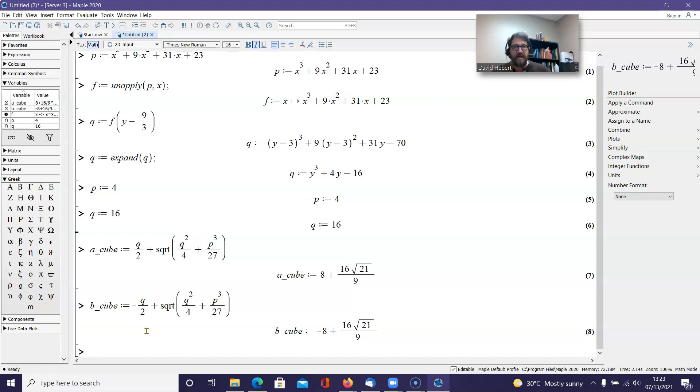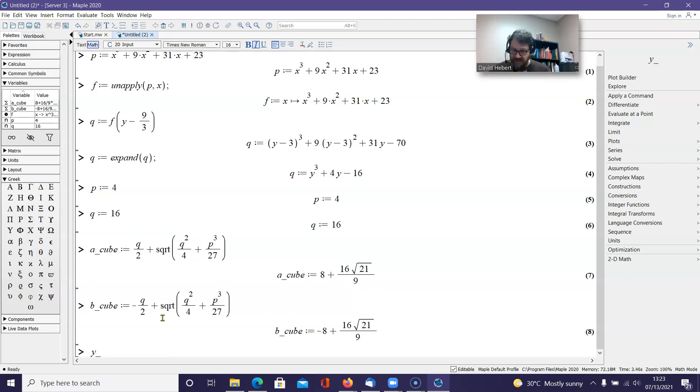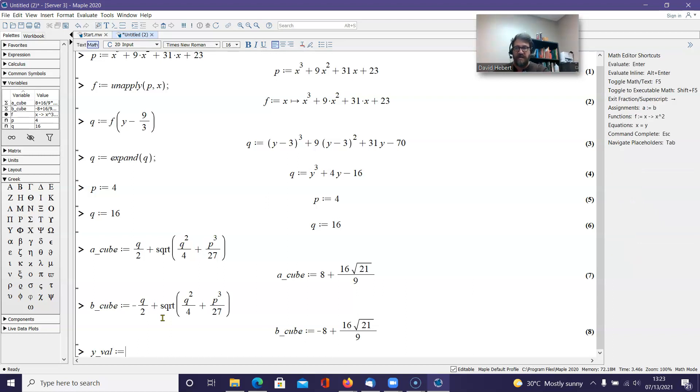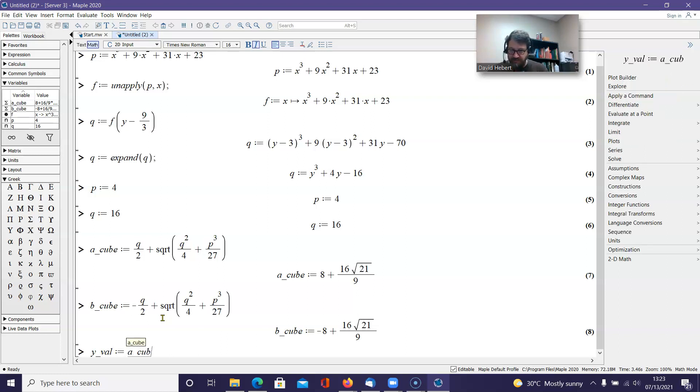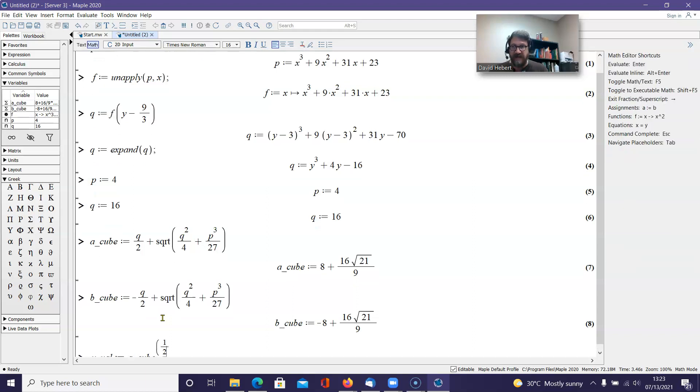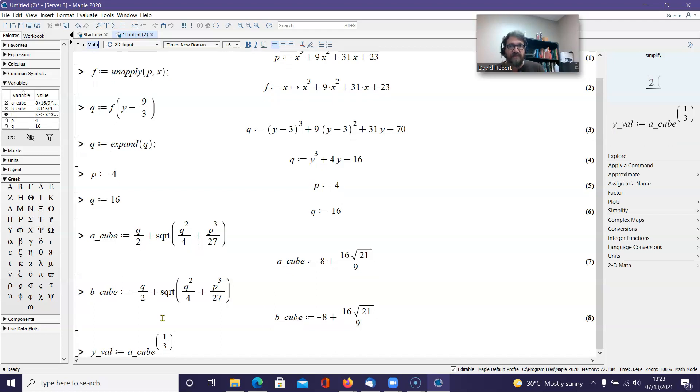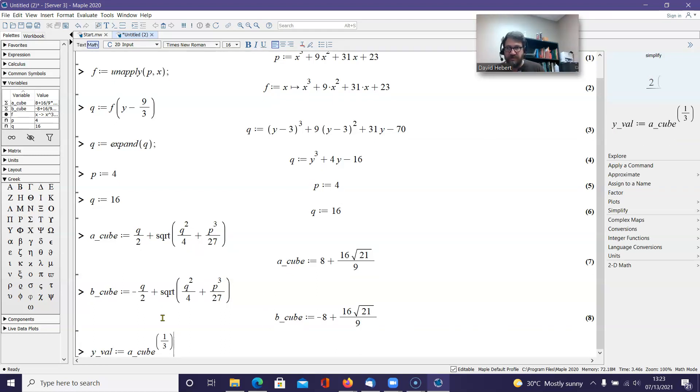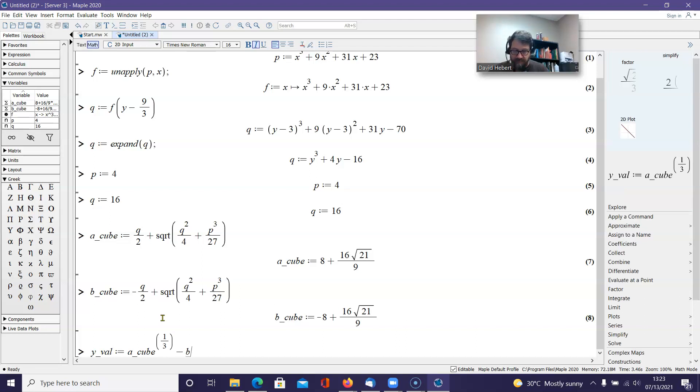Now, what we're claiming is the solution to this equation up here is found by taking a minus b. So what I'm going to do is write y val. And what I'm saying is the y value that's going to solve this y equation up above is going to be equal to a cubed, but we're going to raise that to the rational power of 1 divided by 3. And that's how I'm getting to the third root.